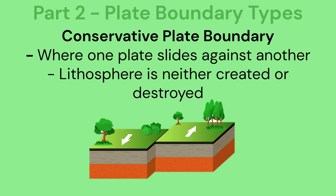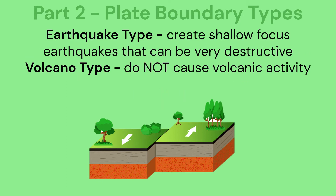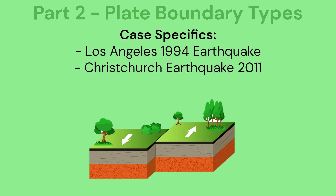Conservative plate boundary: this is where one plate slides against another and lithosphere is neither created nor destroyed. Conservative plate boundaries create shallow focus earthquakes that can be very destructive. They do not cause volcanic activity. Case specifics include the Los Angeles 1994 earthquake and the Christchurch earthquake of 2011.